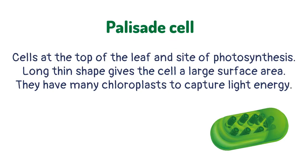Palisade cells are the cells at the top of the leaf and are the site of photosynthesis. Their long thin shape gives the cell a large surface area. They have many chloroplasts to capture light energy.